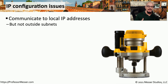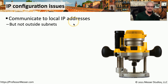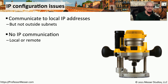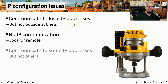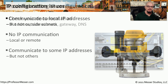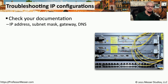If a user has some type of IP configuration problem, they may be able to communicate to local IP addresses but not subnets outside of their local subnet. Or they may not be able to communicate to any device on the network at all. There might also be cases of intermittent connectivity, or they're able to communicate to some subnets but not others. The first step is to check the basic configuration of that device — confirm the IP address, subnet mask, gateway, and DNS settings are correct.